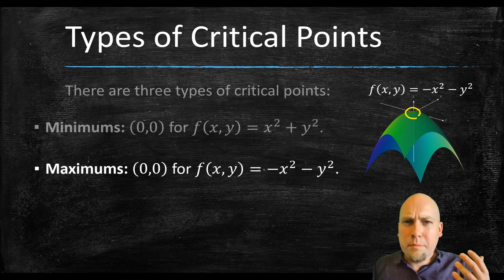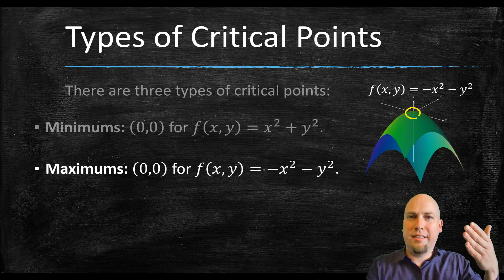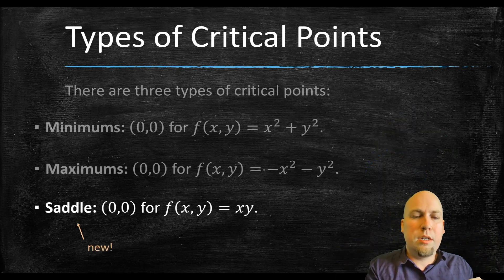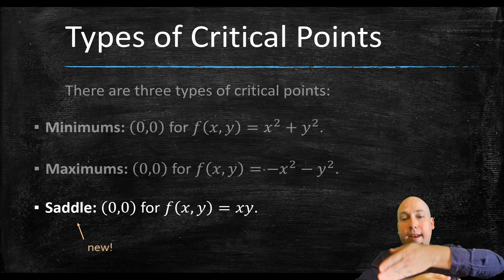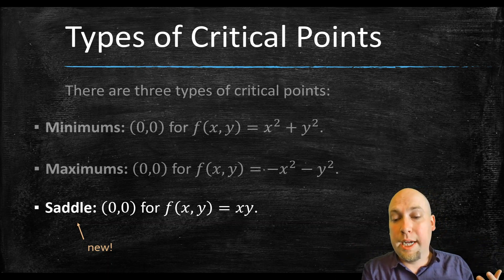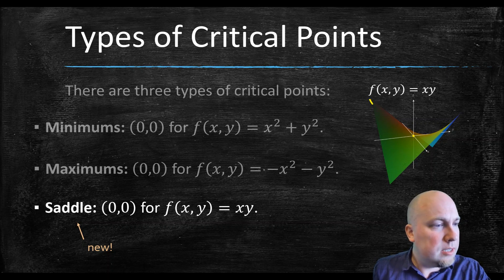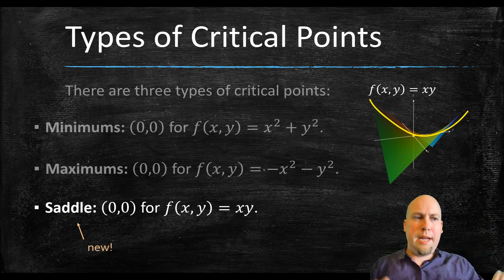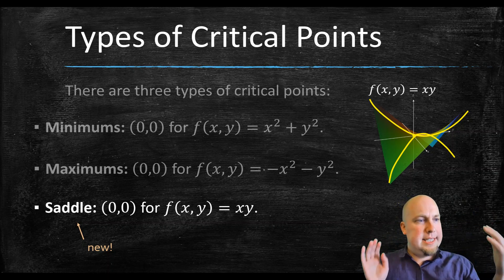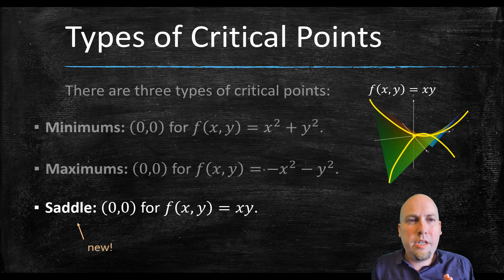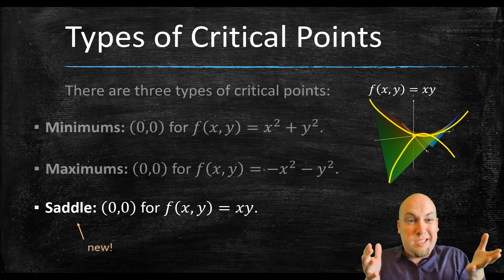Back in the one-variable setting, critical points were basically only maxes or mins. But in the multivariable setting there's another possibility that results from the fact that there are lots of different directions: saddle points. These are points where the function increases in some directions and decreases in others. For example, f(x, y) = x times y has a unique critical point at (0, 0). If you trace in one direction you see it goes up like a parabola, but in the perpendicular direction it goes down like an upside-down parabola. So it's not a max or a min — it's a max in one direction but a min in another. Those are called saddle points because the graph looks kind of like a saddle.